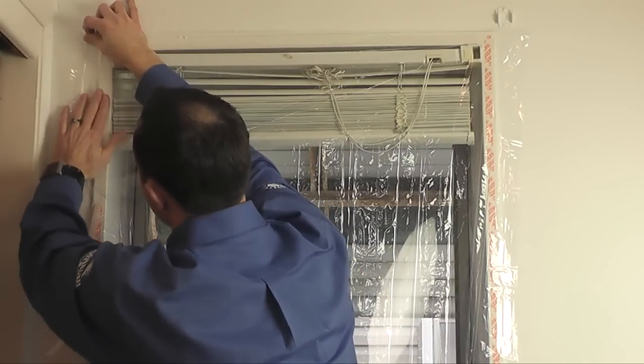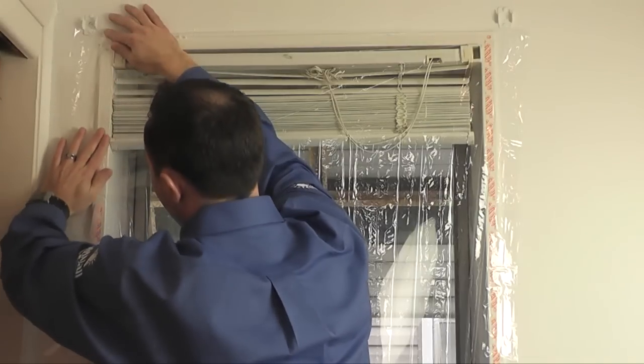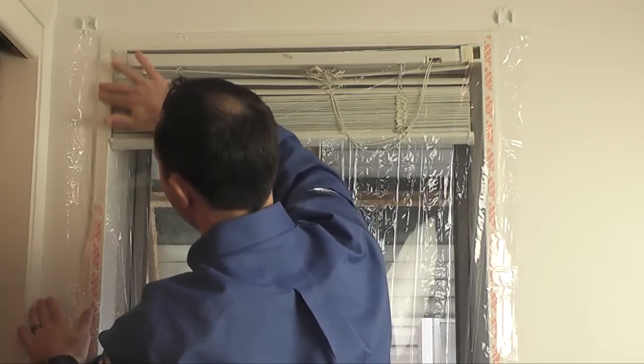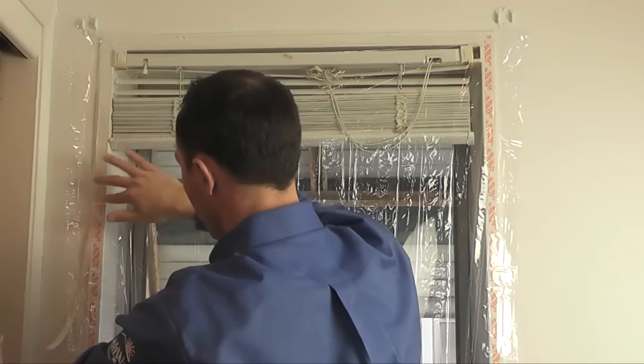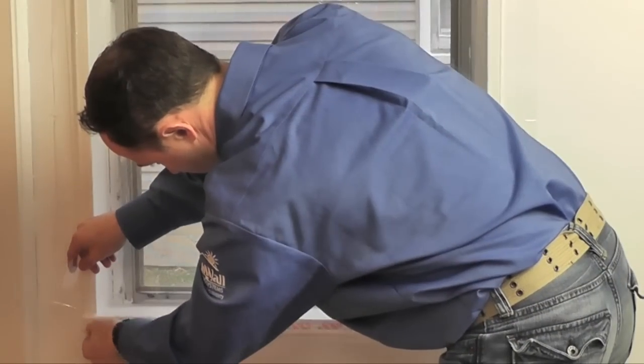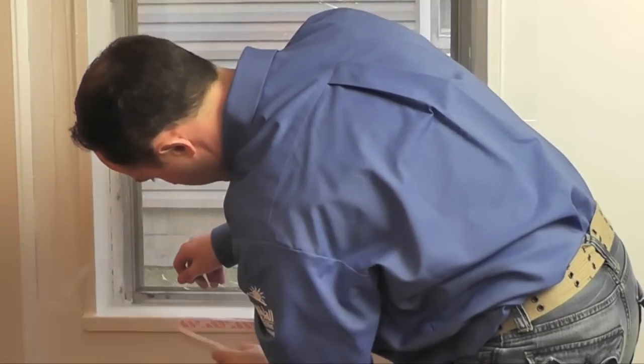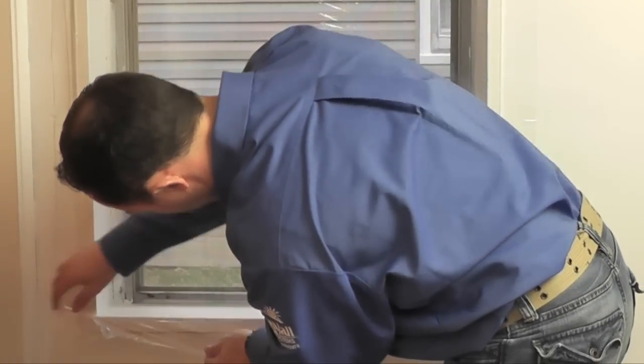Finish each of the sides by removing the remaining backing from the tape and pressing the film down. The bottom should now be a piece of cake. Remove the backing of the tape along the bottom of the window. And working from the center to the edges, firmly press the film down.